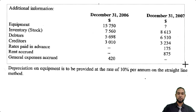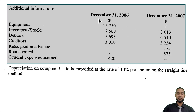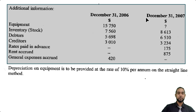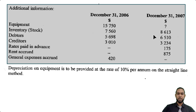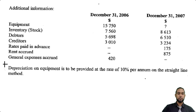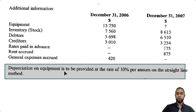We have some additional information — opening balances and closing balances. December 31st 2006 was the end of the previous year, which coincided with the start of the current year, and December 31st 2007 is the current year end. We have an opening balance for equipment but not a closing balance — but remember, we saw in the cash book that we bought new equipment. We have inventory or stock, opening and closing balances, debtors and creditors with opening and closing balances. Rates paid in advance and rent accrued have no opening balances but have closing balances. General expenses accrued has an opening balance. And depreciation on equipment is to be provided at 10% per annum on the straight line method.